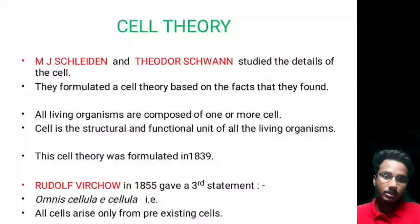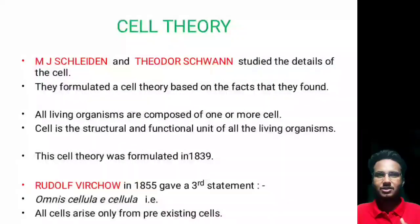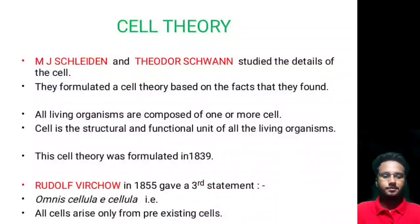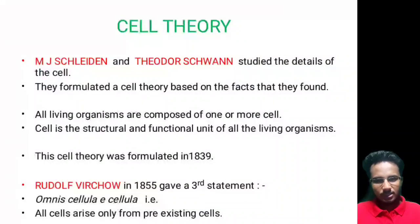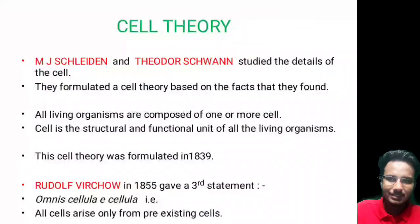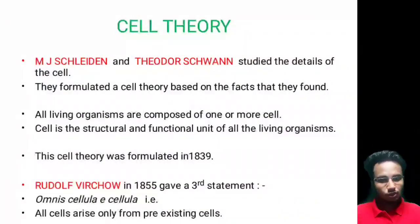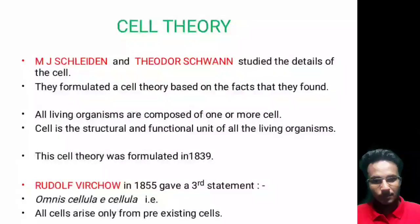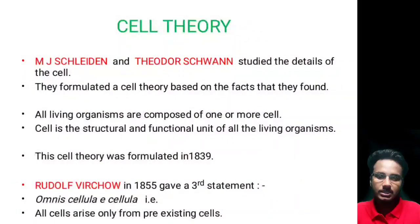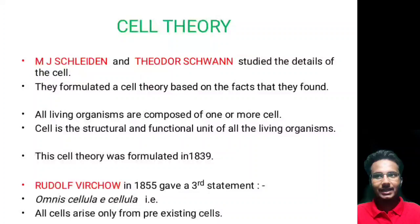The cell was discovered in 1665, and Schleiden and Schwann gave the cell theory in 1839 — just see that time gap. Now, another scientist who has not been given much credit, although he gave a prominent part of cell theory, was Rudolf Virchow. Schleiden and Schwann gave their theory in 1839, whereas Rudolf Virchow gave his contribution in 1855 — that's a gap of 16 years.